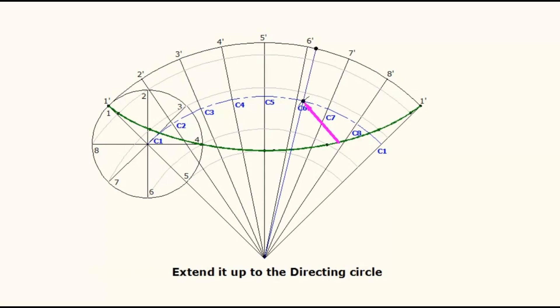Extend this line to meet the directing arc. Join this point with the point on the hypocycloid. Extend this line. This line is the normal. Draw a line perpendicular to the normal through the point on the hypocycloid. This is the tangent.